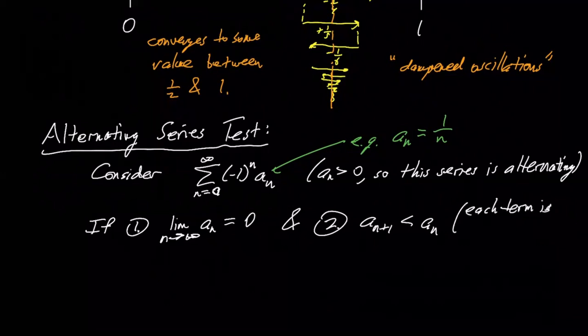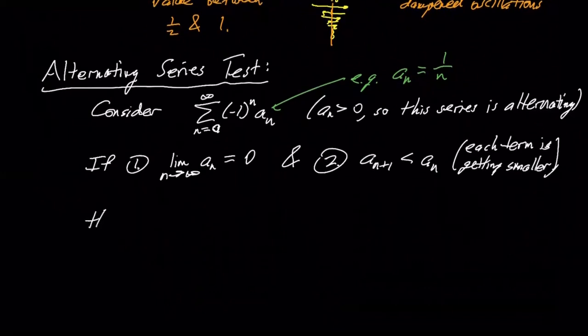Because if you think about it, what that means is that as we alternate, it's that picture that we have above where we jump back, but we jump back less. So we add, subtract, and add, subtract. And each time we're reversing direction, our partial sums are reversing directions, but going not as far in the previous direction. And so that's why you get trapped in this sort of well where it converges. So each term is getting smaller. So if these things are true, then the series converges. Then the sum converges.